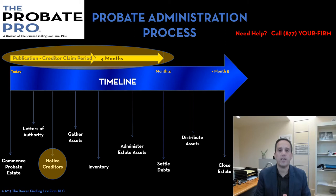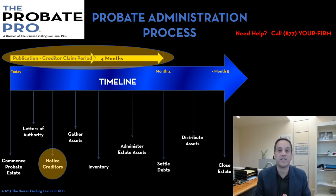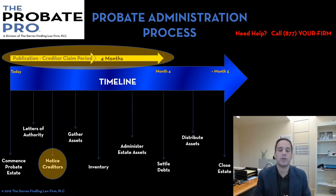The first way is notice to any known creditors. These are creditors that would have to be reasonably identified by a personal representative by reviewing the mail or through their general knowledge of the death of the person who died. They are entitled to a specific form called a Notice to Known Creditors.